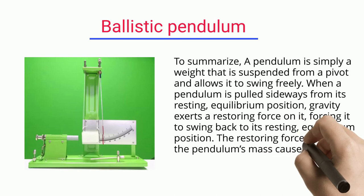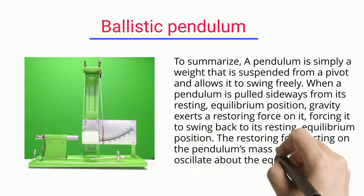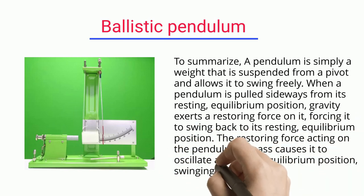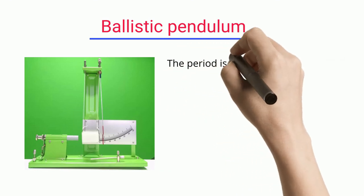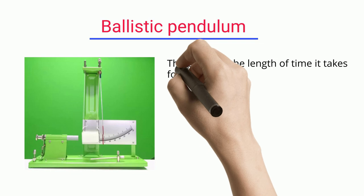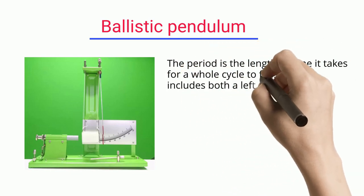The restoring force acting on the pendulum's mass causes it to oscillate about the equilibrium position, swinging in both directions once it is liberated. The period is the length of time it takes for a whole cycle to finish, which includes both a left and right swing.